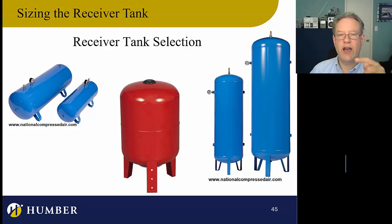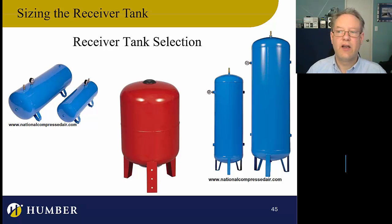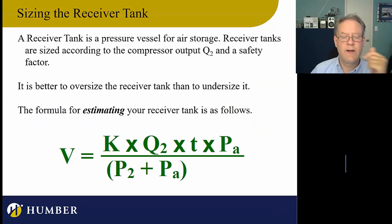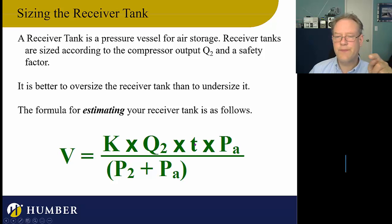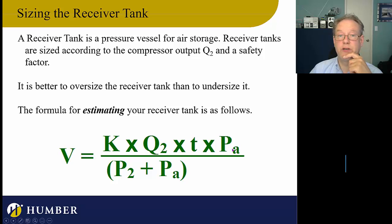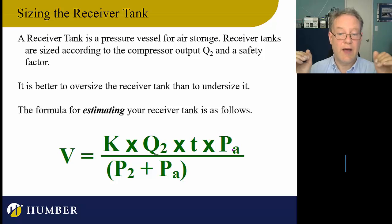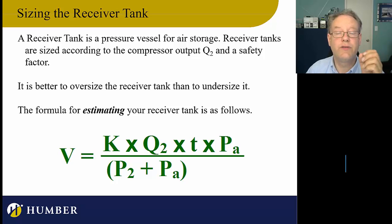Now about the receiver tank — you won't be doing calculations for receiver tanks in this course, but here's the concept. The formula includes K as a safety factor, flow rate out, time, and pressures. The receiver tank is like a capacitor in your system, allowing for fluctuations. The tank volume is dependent on atmospheric pressure, so if you're on a mountain or airplane, this formula gives a different number.